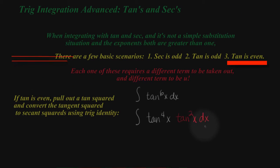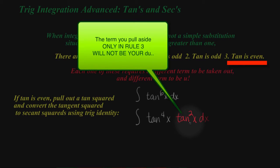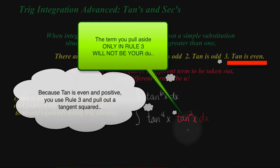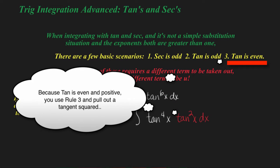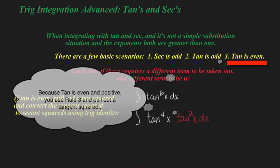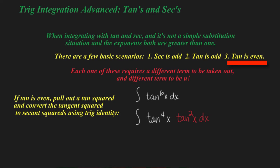If we pull out a tangent squared, this is what would happen. And normally in this scenario, we would say this is your DU term, but that's not your DU term here. We're going to convert this into a secant squared minus one and continue to do so until we no longer have even tangents that we have to deal with.